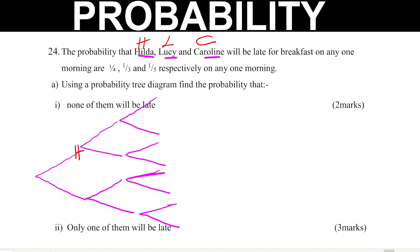The probability that Hilda will be late for breakfast is 1/4. The probability of Hilda not being late, written as H prime, will be 3/4, since the sum of probabilities in any branch should give you 1. So probability of Hilda being late is 1/4, and not being late is 3/4.